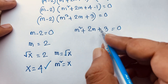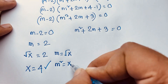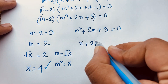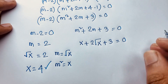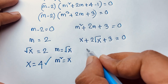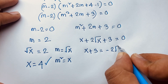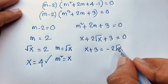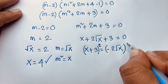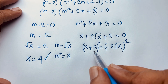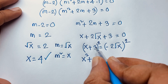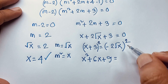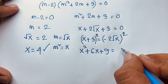Case 2: m² plus 2m plus 3 equals 0. Since m² equals x and m equals √x, substituting back gives x plus 2√x plus 3 equals 0. Rearranging: x plus 3 equals negative 2√x. Squaring both sides, since the negative power is an even number it is always positive, so we get (x plus 3)² equals 4x.